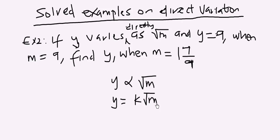We are told that when y is equal to 9, m is equal to 9. So we will simply fix our values here. y would be 9 equals k root 9.